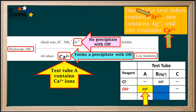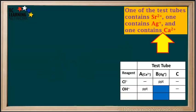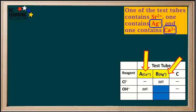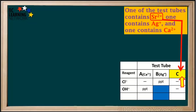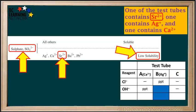Hydroxide formed a precipitate in test tube A but not in test tube C. The table tells us that hydroxide forms a precipitate with calcium ions but not with strontium ions. Therefore, test tube A contains calcium ions — we'll write Ca2+ by A. We were told one test tube contains strontium, one contains silver, and one contains calcium. We've determined calcium is in A and silver is in B, so strontium must be in C. But to give us more evidence, we can check it with another precipitation reaction. The table shows that strontium forms a low solubility compound with sulfate.